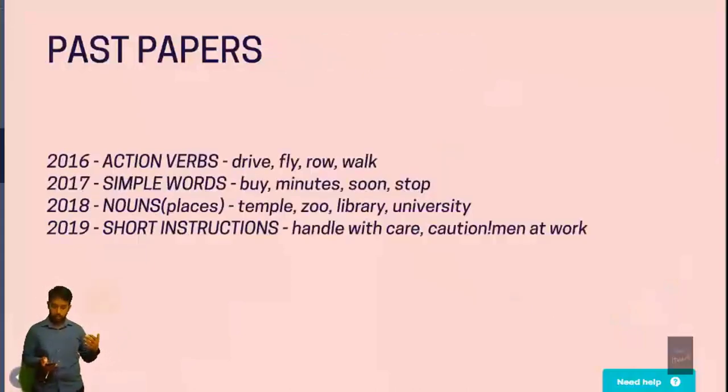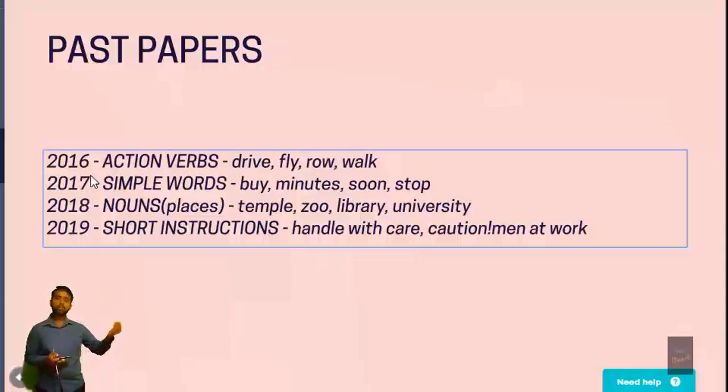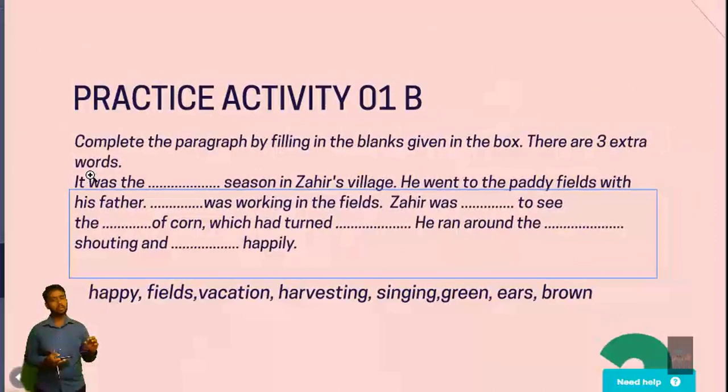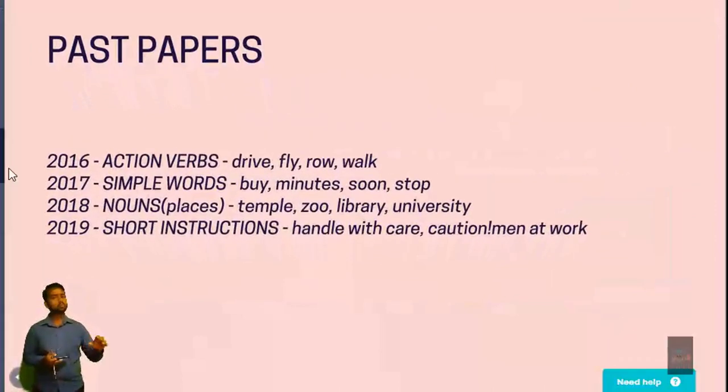In 2016, you can see they have asked about some action words. For example, you should know what is drive, what is fly, what is walk, what is row, those sorts of words which are very similar to the actions. And in 2017, what has happened? Simple words, for example, buy, minutes, soon, stop, those sorts of things.